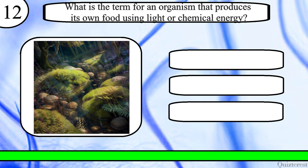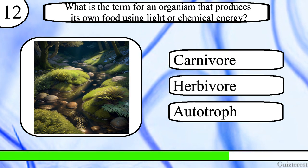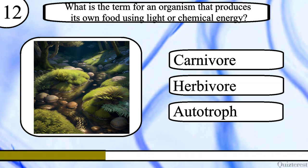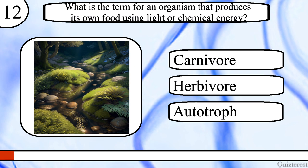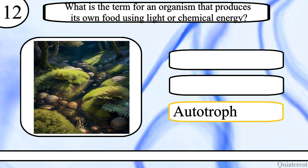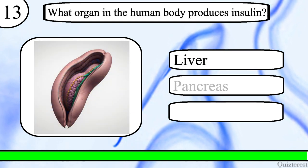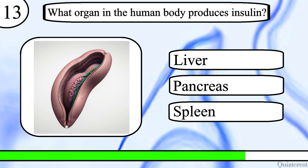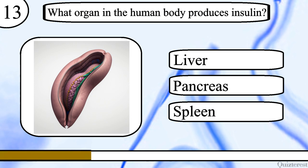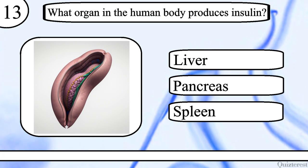Question 12. What is the term for an organism that produces its own food using light or chemical energy? Carnivore, herbivore or autotroph? The correct answer is autotroph. Question 13. What organ in the human body produces insulin? Liver, pancreas or spleen? The correct answer is pancreas.